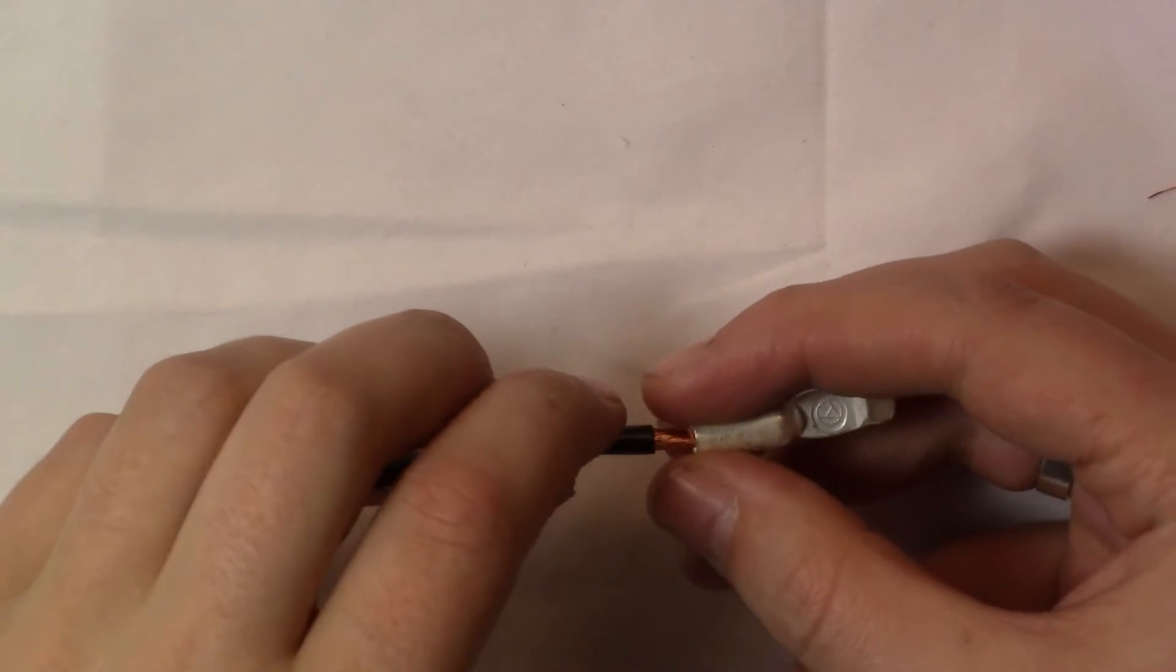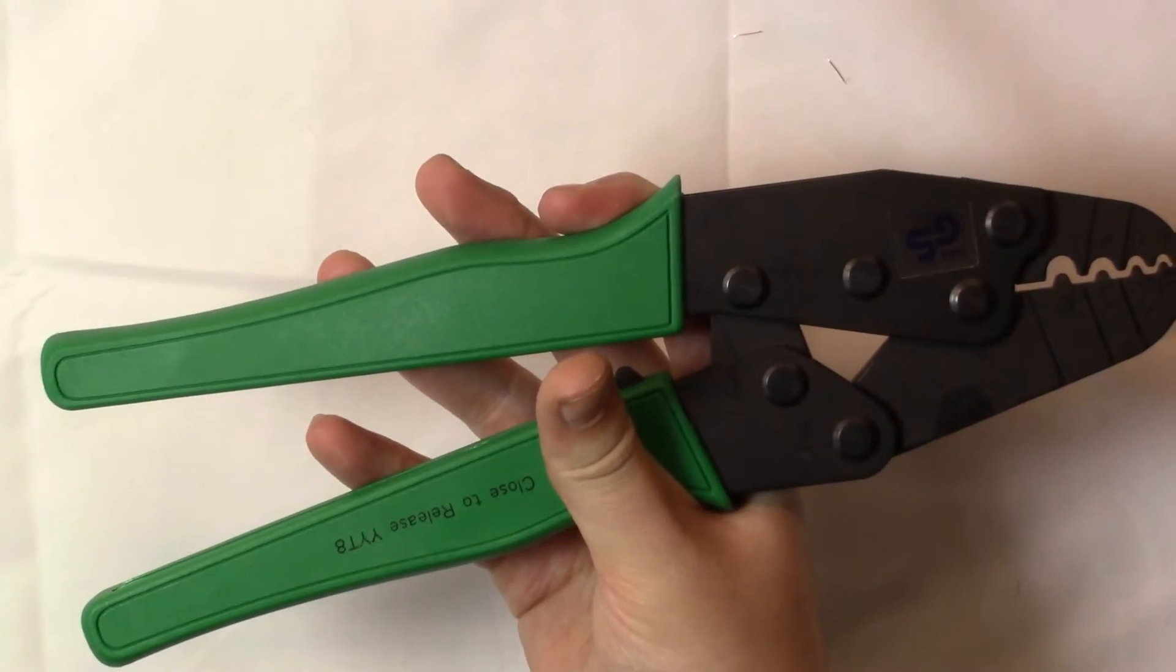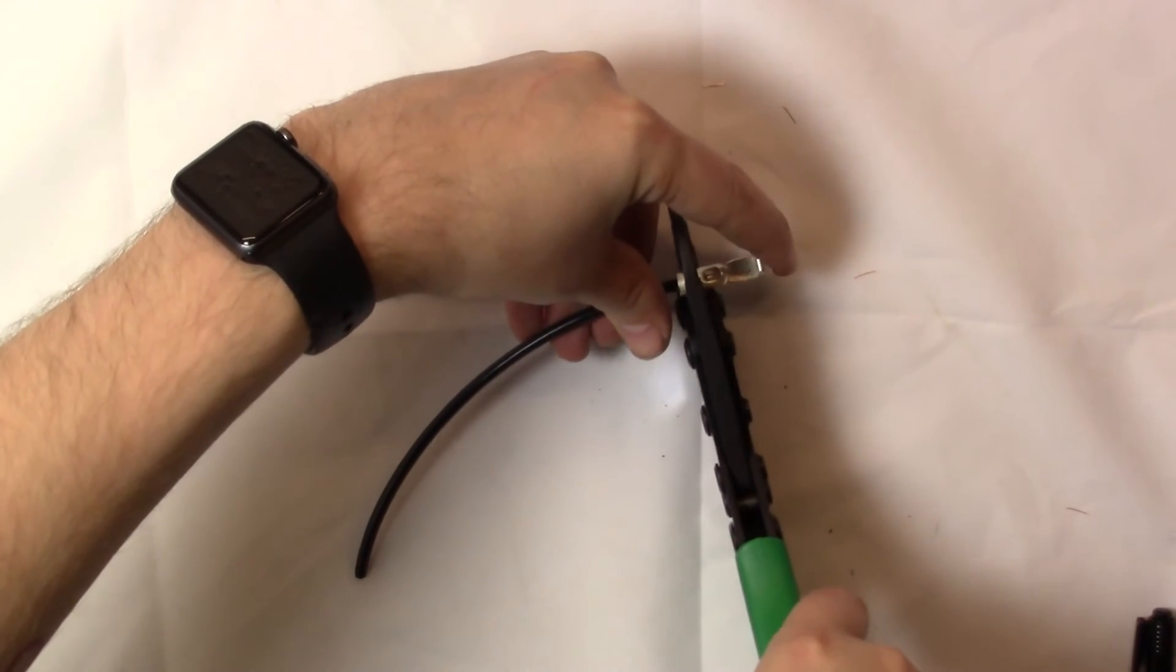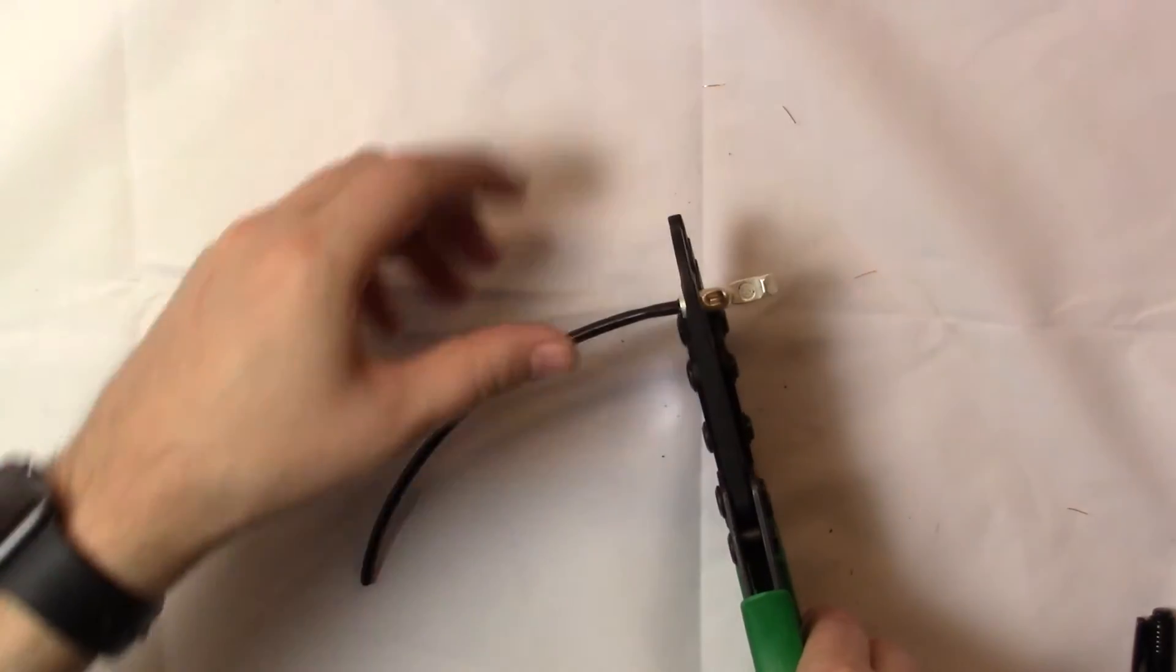When using our smaller terminals we found our hexagon crimping tool not that effective. So we use our indent tool as you can see here. This creates the perfect crimp for this size. You want to use the next size up unlike with the larger wires. So you are going to go for a 10mm² for a 6mm².